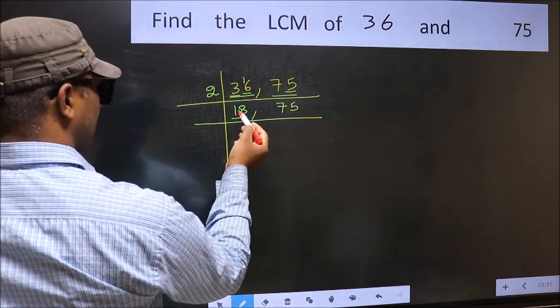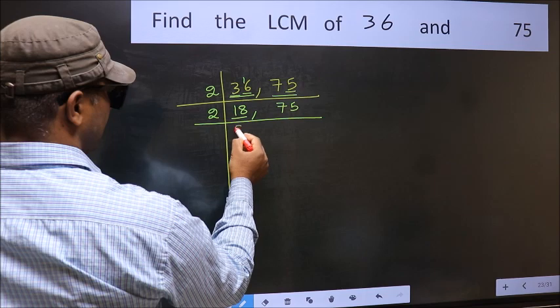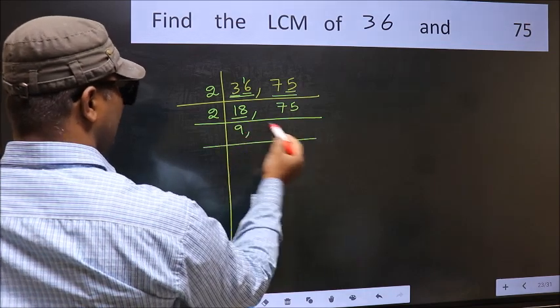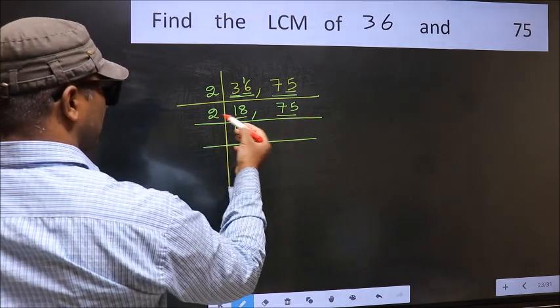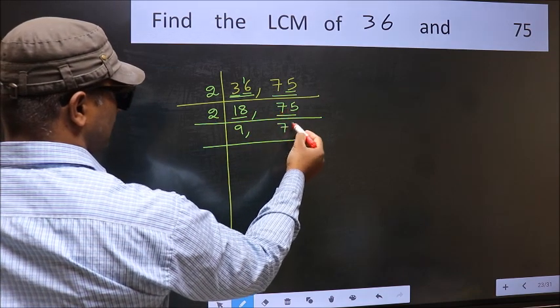Now here we have 18. 18 is 2 times 9, which is 18. The other number 75, not divisible by 2, so you write it down as it is.